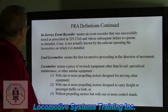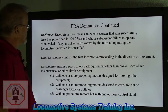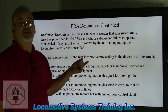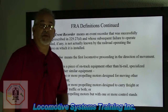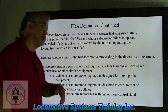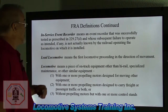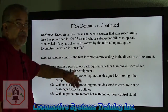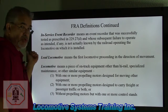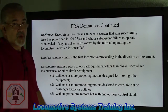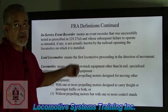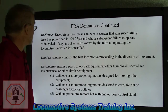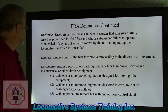A lead locomotive means the first locomotive proceeding in the direction of movement. So that lead locomotive that's moving east — that would be the easternmost locomotive, whether it's running or not, but it's still considered the lead locomotive by definition.